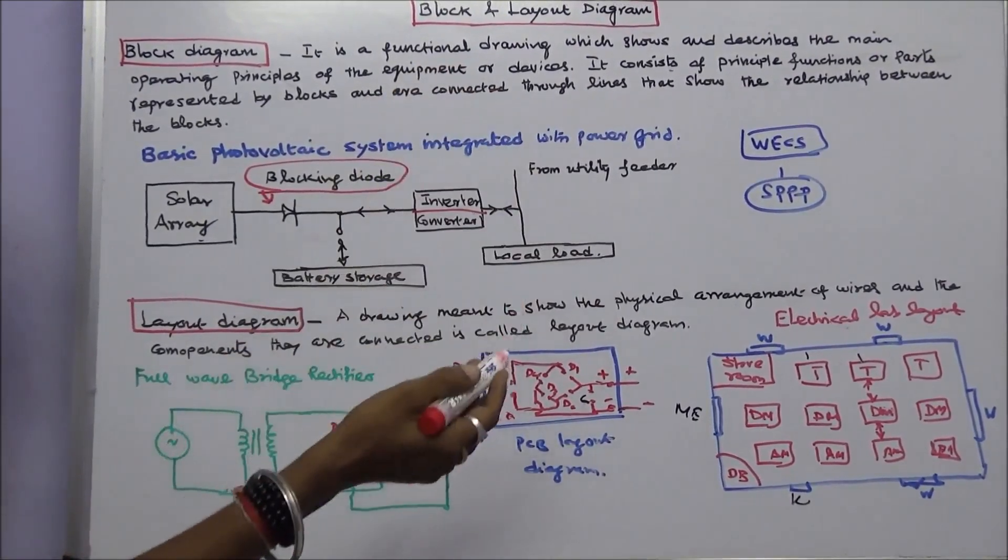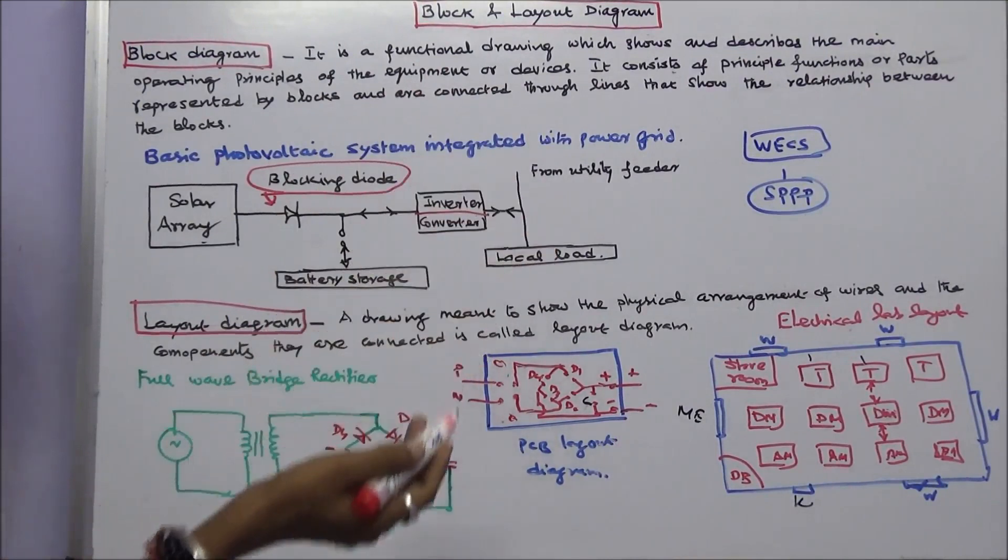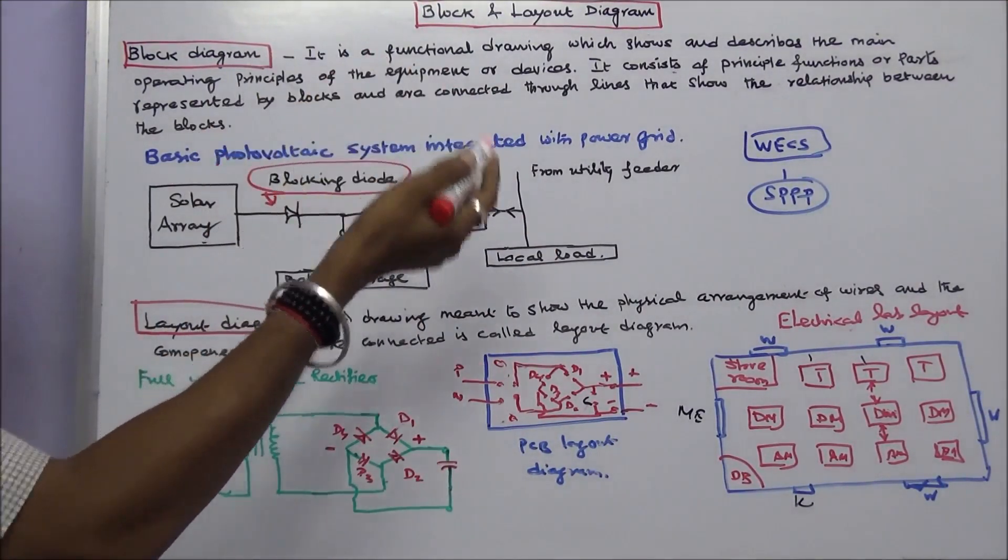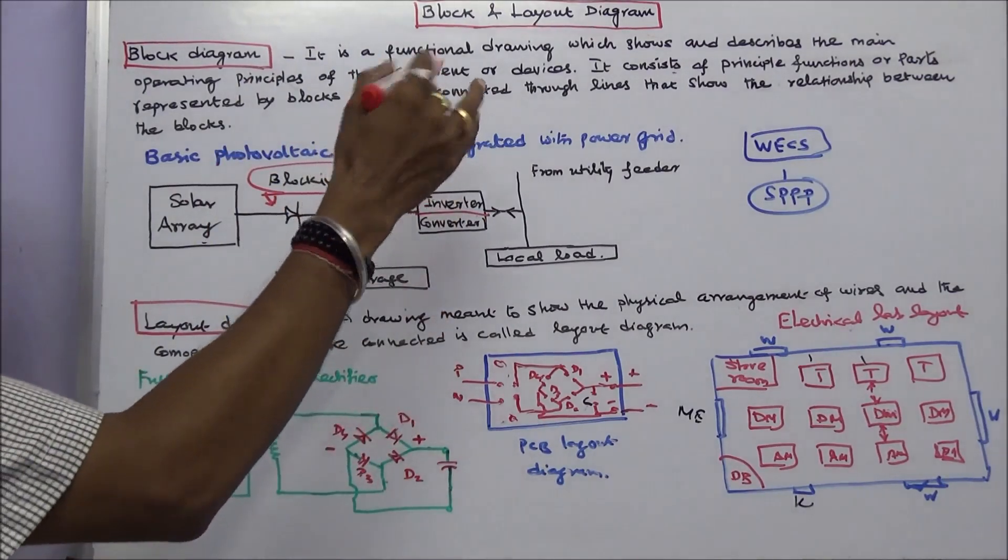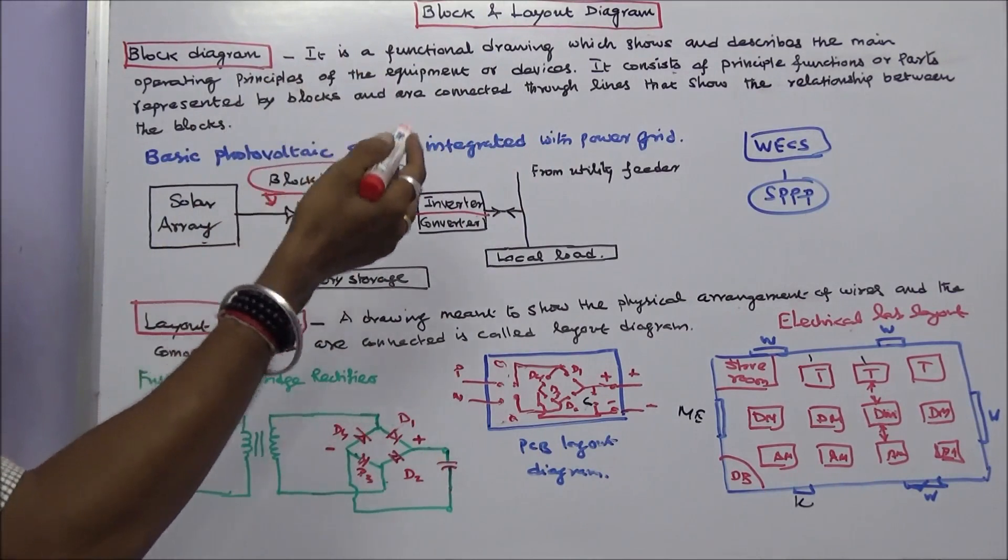This class discusses the difference between block diagram and layout diagram. A block diagram is a functional diagram which shows and describes the main operating principles of the equipment or devices.